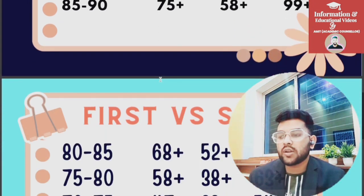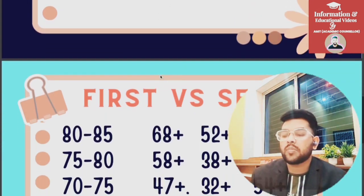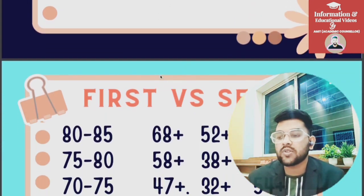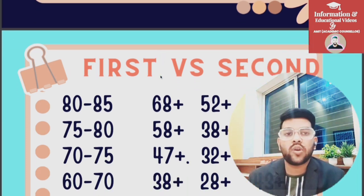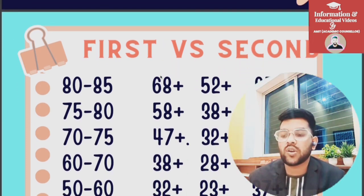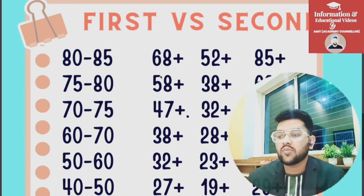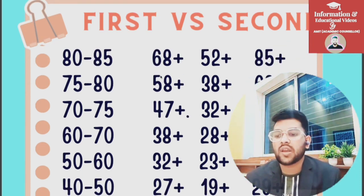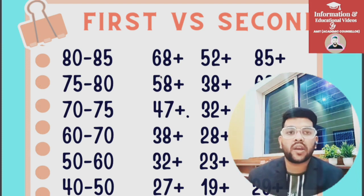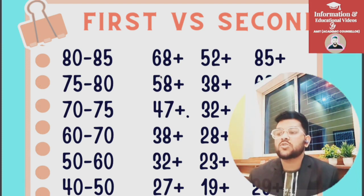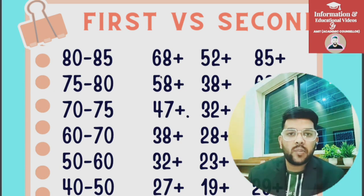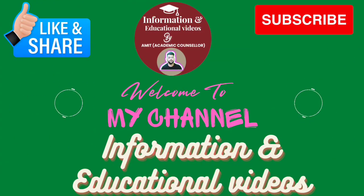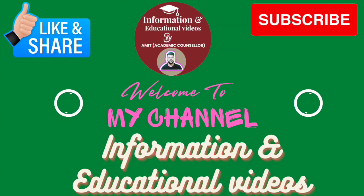For 85 percentile: hard 58, easy 99 plus. For 80: hard 52, easy 85 plus. For 75: hard 38, easy 63. For 70: hard 32, easy 54. For 60: hard 28, easy 43. For 50: hard 23, easy 37. For 40 percentile: hard 19, easy 29 marks required. For moderate paper you can check the first column.